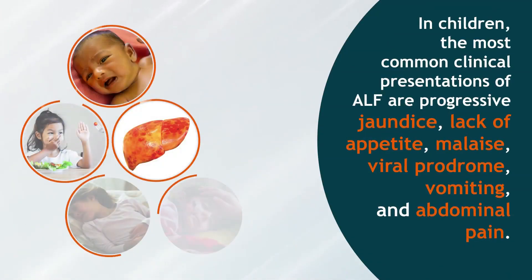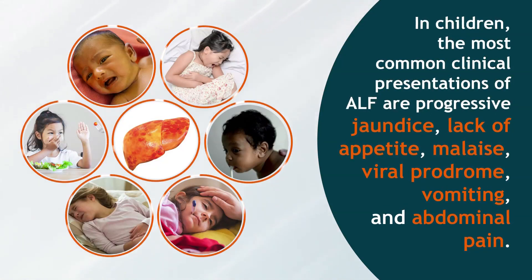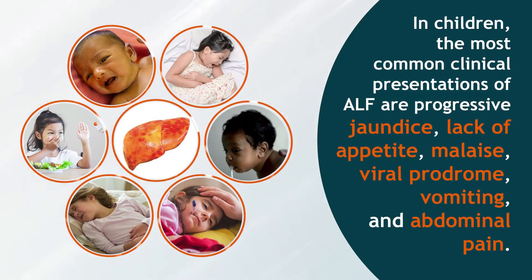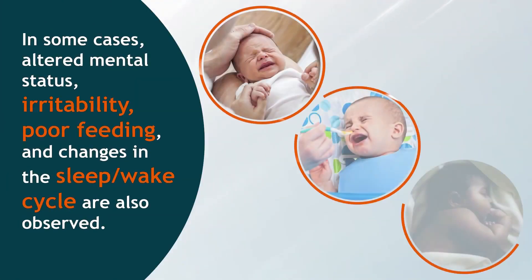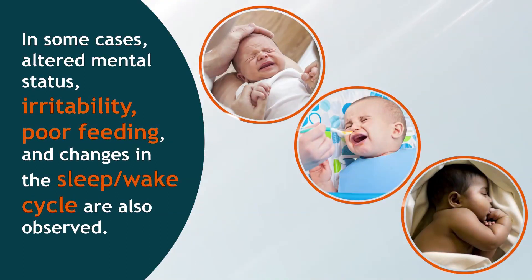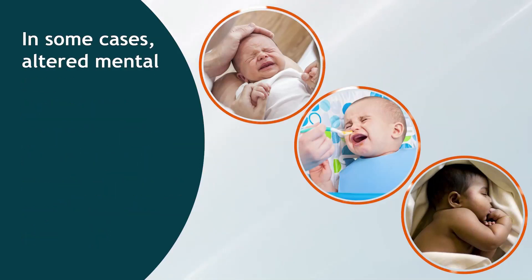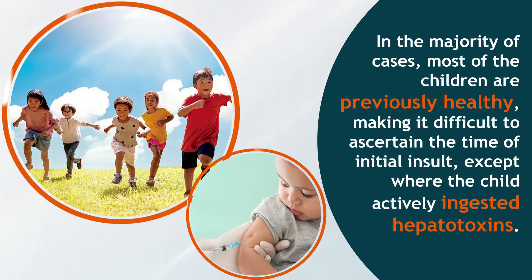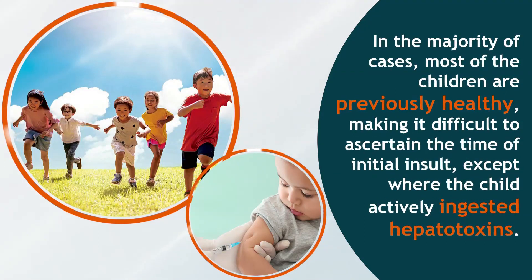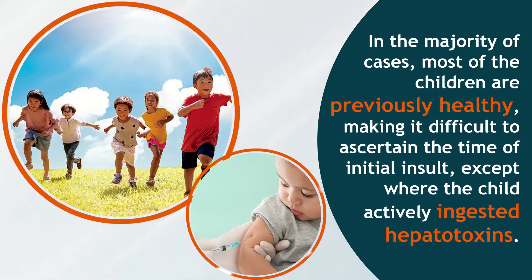Regarding clinical presentation, in children the most common presentations of ALF are progressive jaundice, lack of appetite, malaise, viral prodrome, vomiting, and abdominal pain. In some cases, altered mental status, irritability, poor feeding, and changes in the sleep-wake cycle are also observed. In the majority of cases, most children are previously healthy, making it difficult to ascertain the time of initial insult, except where the child actively ingested hepatotoxins.